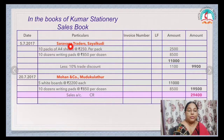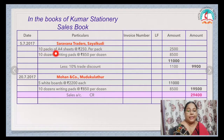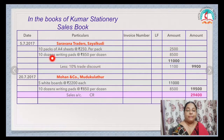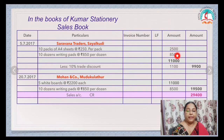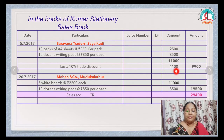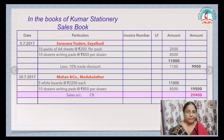5-7-2017: Saravana Traders. They bought 10 packs of A4 sheets at the rate of ₹250 per pack — ₹2,500. 10 dozens of writing packs at the rate of ₹850 per dozen — ₹8,500. Adding these: ₹2,500 plus ₹8,500 equals ₹11,000. Less 10% trade discount of ₹1,100. The outer column shows ₹9,900.